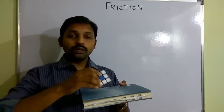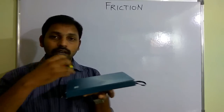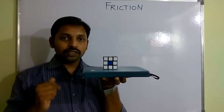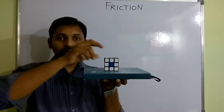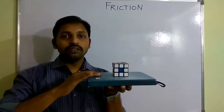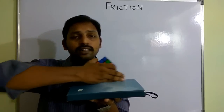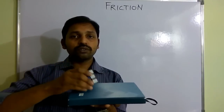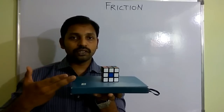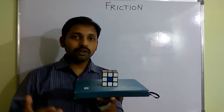When two surfaces are in contact with each other — the upper surface of the book and the lower surface of the cube — when one of the surfaces tends to move in one direction, the force experienced by the other surface is called friction. When they are at rest, that doesn't mean there is no friction. There will be friction both when they are in motion and when they are at rest.